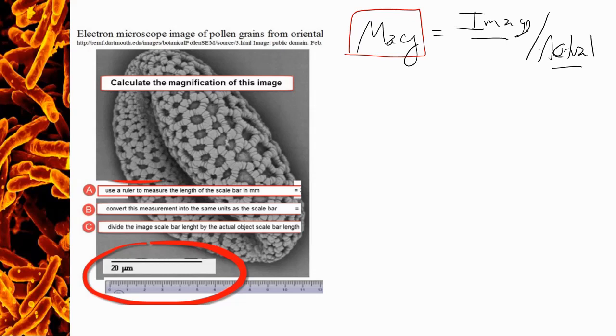Remember, we're just looking at this micrograph of this organism. We have no idea what its actual size is. What we do have is the scale bar. And so this, for our first calculation here of magnification, is the importance of having that scale bar, because it's going to give us both an image size and an actual size.